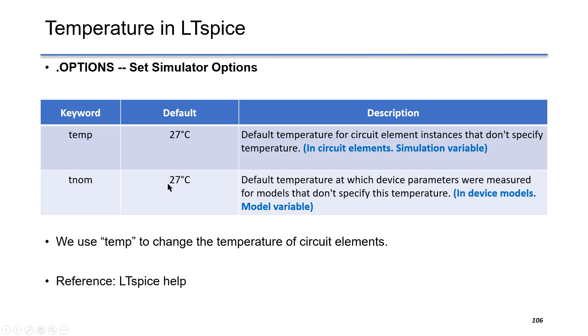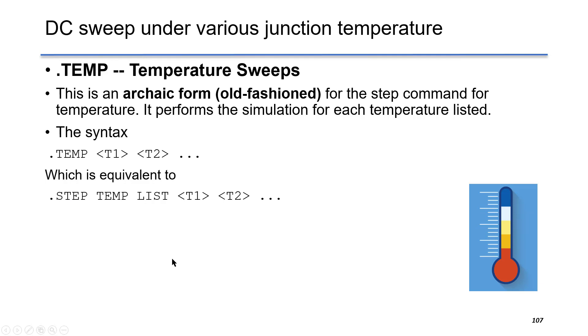The other one is T-norm. The default value is also 27 degrees C. So this is the default temperature at device parameter. For example, if you define a device model in LT SPICE, that's a parameter in your syntax. So in simulation, we use temp to change the temperature of circuit elements. We use temp to change the device temperature.